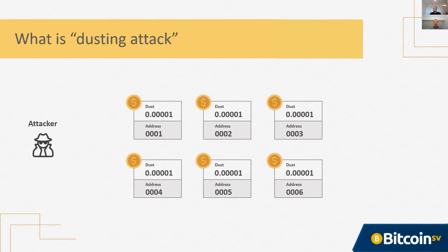The attacker begins with a whole list of addresses that don't apparently have any relation to each other. If you never reuse an address, they'll never be able to derive any connection between one address and another. So the dust attacker begins by sending very small amounts of Bitcoin — what we call dust. It's commonly brought up in the context of the dust threshold, which is an amount of satoshis so low that you can't actually spend it economically. The dust used in attacks is actually slightly higher than that threshold so that miners won't reject the transactions containing them.